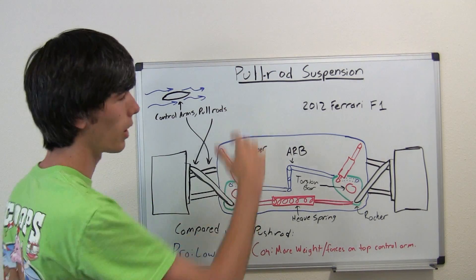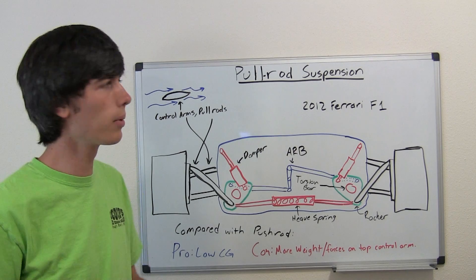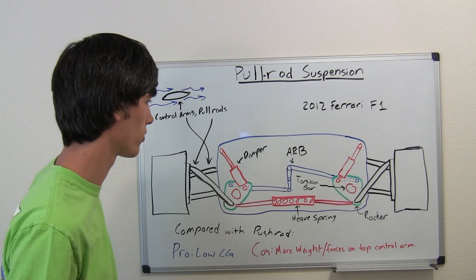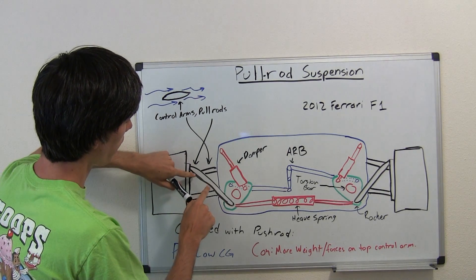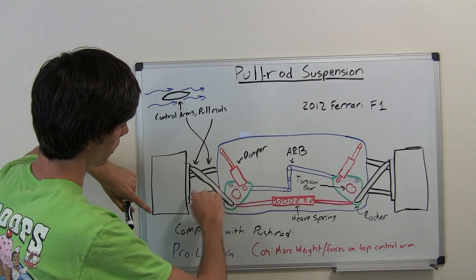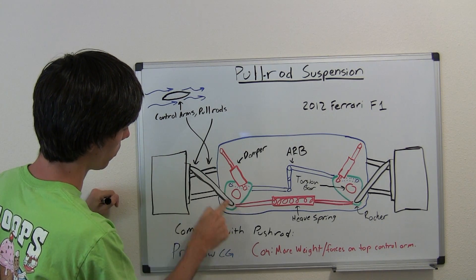So if you just took it, if I took my whiteboard from my last video and just turned it upside down, I probably could have gotten away without having to draw this. So basically what you do is instead of having that push rod, which was this way, you now have this pull rod, which is now oriented this way.